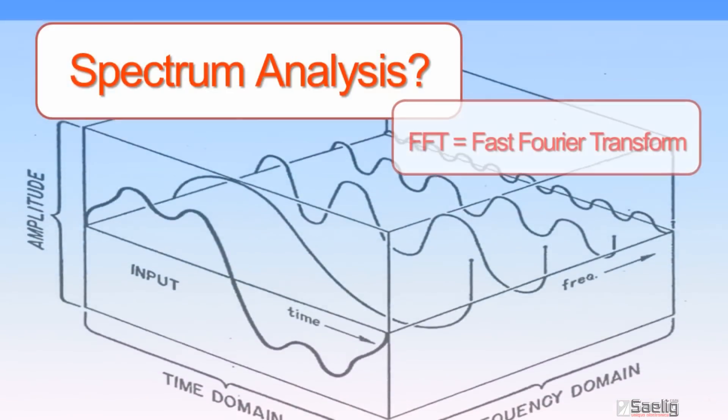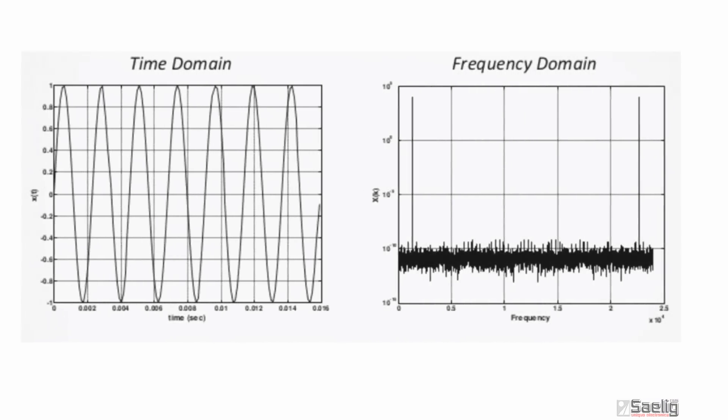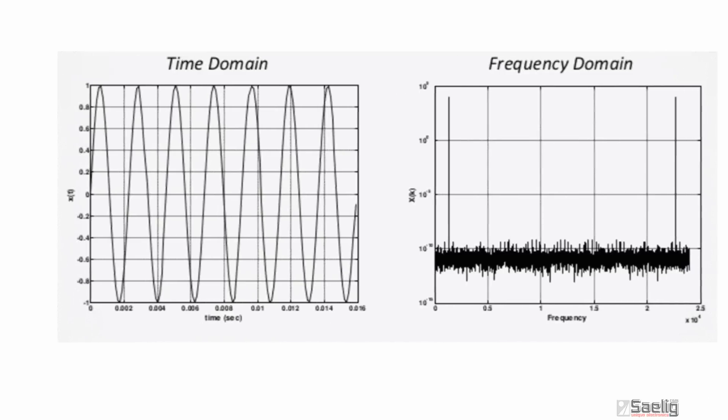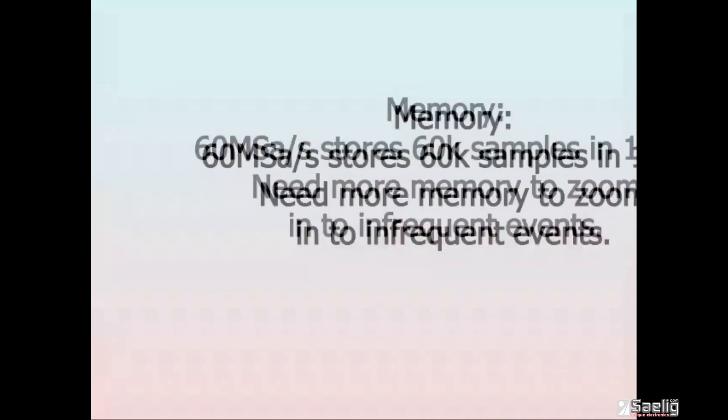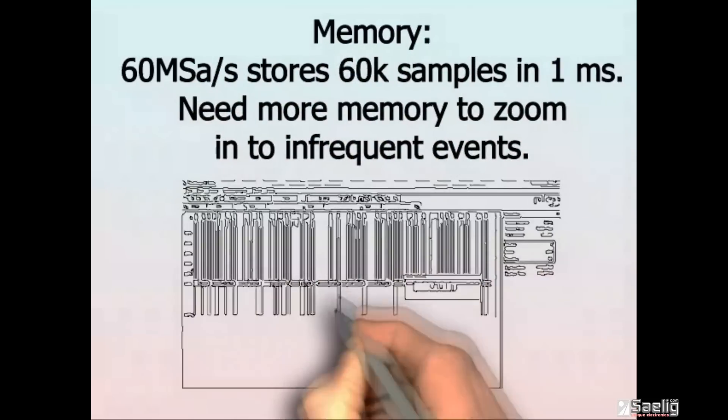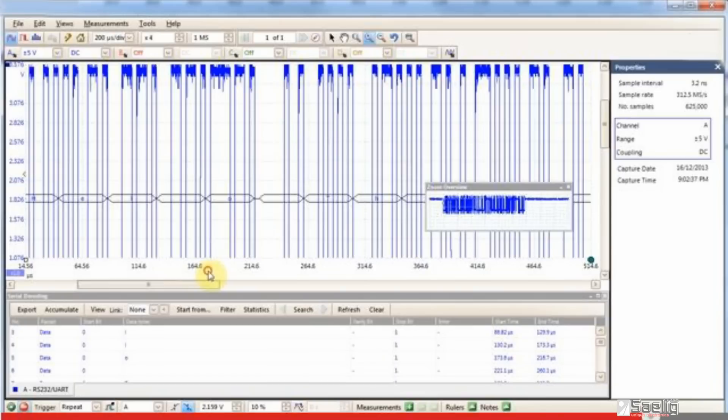Do you need frequency domain display for spectrum analysis? Built-in memory size is another important factor. The more memory a scope has means you can expand the stored waveform to discover small or infrequent glitches. So the larger the memory, the better.